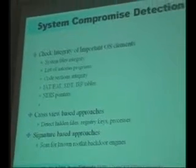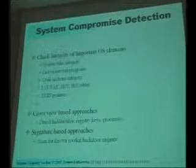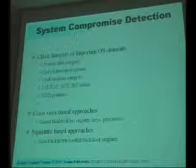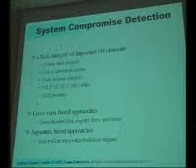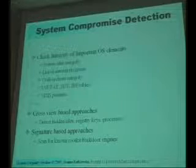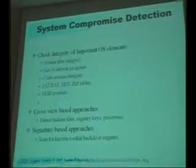We can divide system compromise detection into three categories. One is based on integrity — verification of integrity of some operating system elements. These are tools like system size integrity checkers, like SVV which I'm going to introduce in just a few seconds, and other things. So we have tools which check integrity of some operating system elements — this is the explicit compromise detection approach.